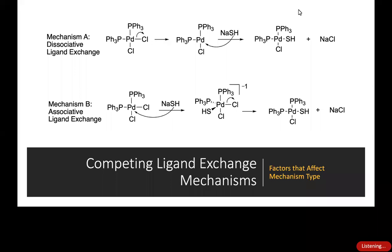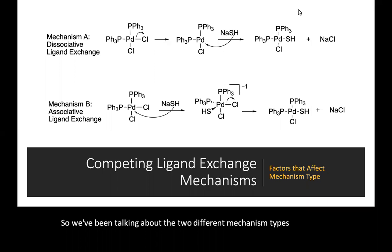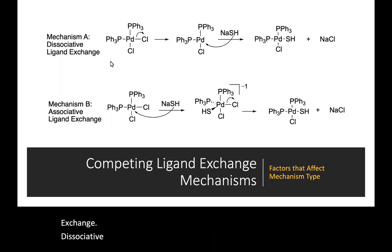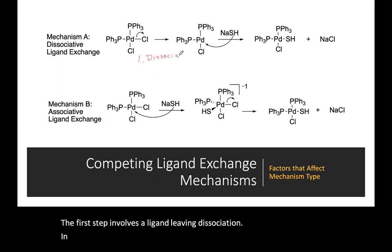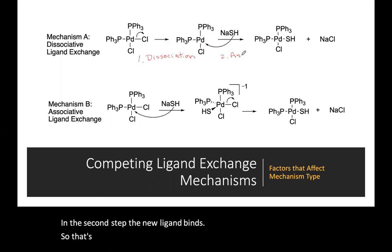We've been talking about the two different mechanism types for ligand exchange. In dissociative ligand exchange, the first step involves a ligand leaving — dissociation — and in the second step the new ligand binds, which is an association step.